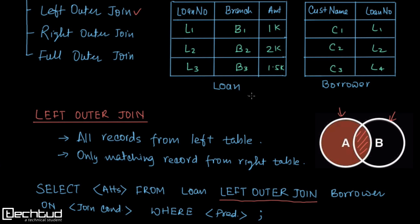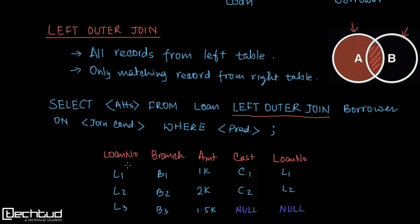Now let's see what the output would be when we perform left outer join over the loan and borrower tables. After performing the join, we will have all the tuples from the left table with attributes in sequence, and only two tuples from the right-hand side table. We have only those tuples with matching keys — that is l1-l1 and l2-l2. Because l3 and l4 are not matching, we still have all the tuples from the left table but the corresponding columns from the right will have null. This is the overall output of left outer join.